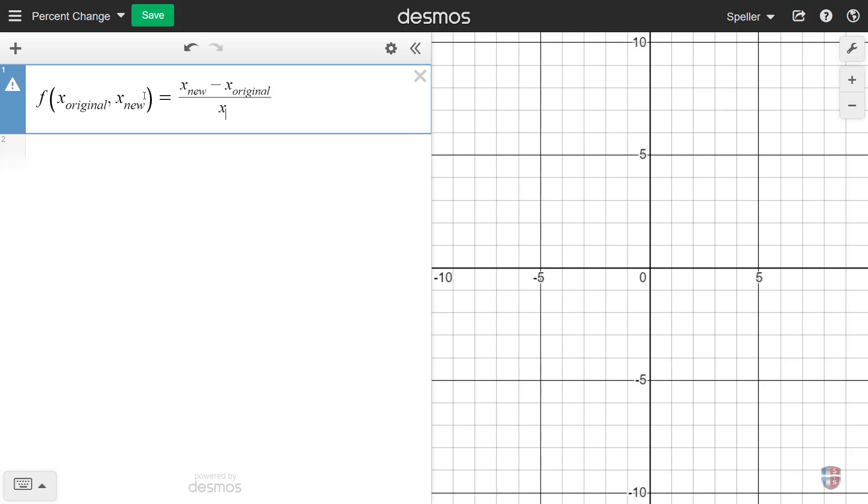Which is x underscore original, and then to make this a percentage we're going to multiply everything by 100. Now let's go ahead and actually use this function. So the name of the function is F.